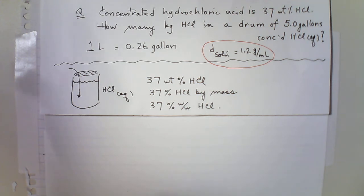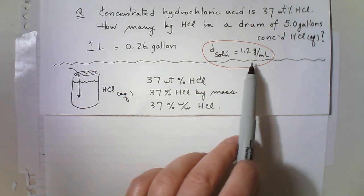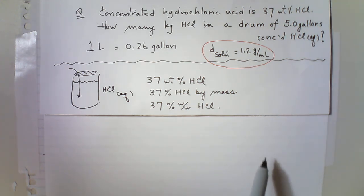We know, or we're given, that a liter corresponds to just a little over a quarter of a gallon, and the density of concentrated hydrochloric acid is given as 1.2 grams per mL. So it's heavy stuff compared to water. It's quite dense. I shouldn't say heavy, it's dense. More dense.